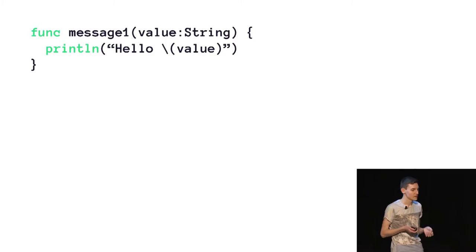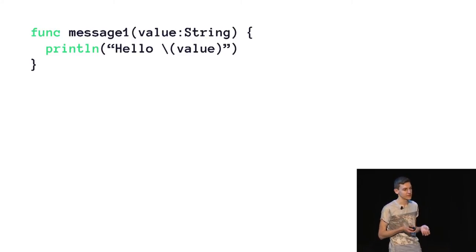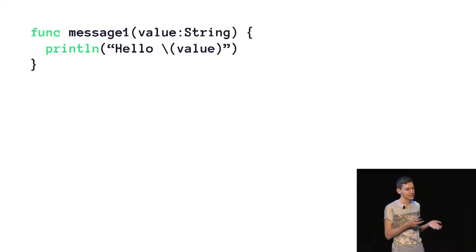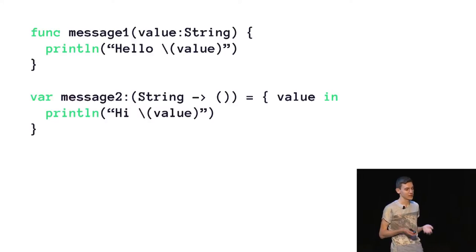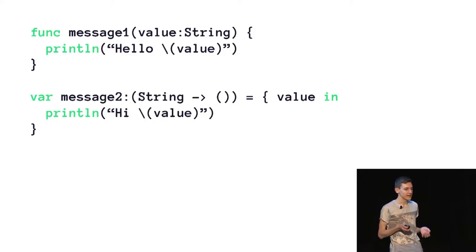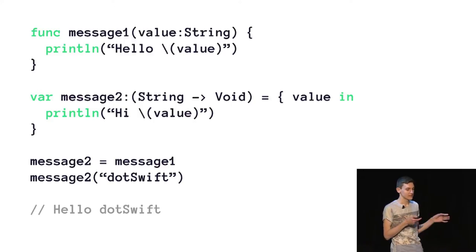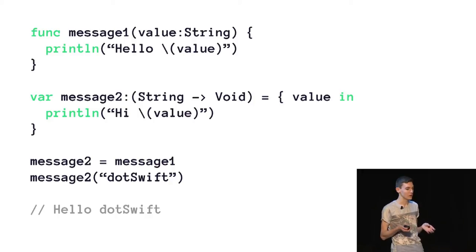This allows us to do a lot of cool things — we can really interchange them. Here's an example: we have a function called message1 that takes a string value and prints 'hello' followed by that value, so if you pass in 'Kyle' it would say 'Hello, Kyle.' We can do that as a variable closure — it looks quite different but does pretty much the same thing, printing 'hi' instead. Then we can set message2 equal to message1, because they're the same thing, and when we call message2 it'll call 'Hello, Swift' instead of 'Hi, Swift.'